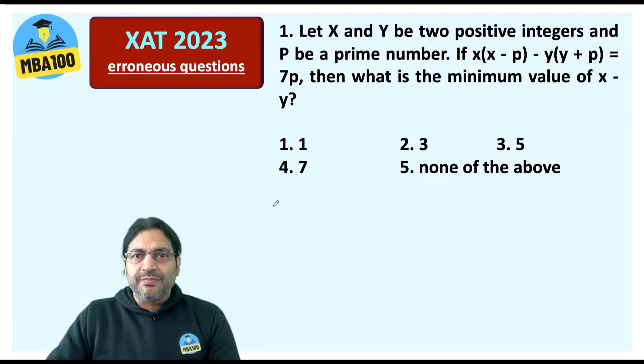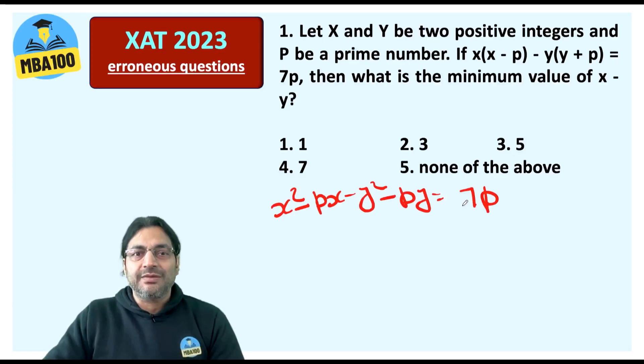So let's start from here. X² - PX - Y² - PY is given to be 7P. Mind you, X and Y are both positive integers and P is a prime number.